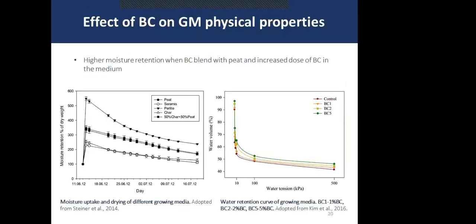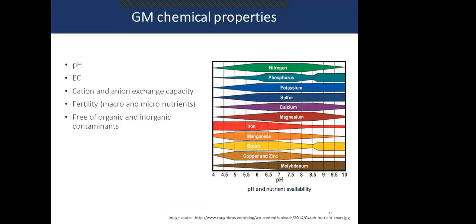Regarding moisture retention in growing mediums: comparing different constituents, a 50:50 mixture of peat and biochar shows higher moisture content retention compared to biochar alone. Another study shows that increasing biochar content increases moisture retention. These figures demonstrate that biochar can positively contribute to moisture retention when combined with peat.